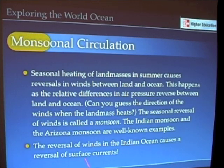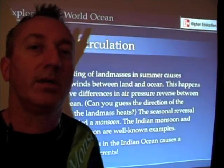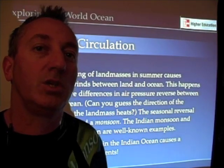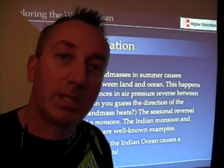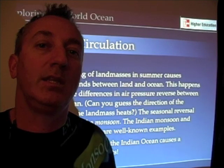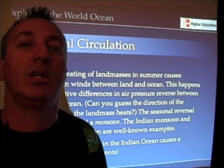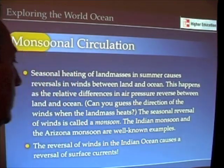Air flows from the ocean towards the land because when the landmasses heat, that air is rising, and air comes in off the ocean to take its place. That's a seasonal process, and it happens both in India as well as the American southwest. That word 'monsoon' means season, and so you have seasonal changes in winds, seasonal changes in precipitation, and seasonal changes in currents in the Indian Ocean — the monsoonal circulation really being a type of seasonal circulation pattern.